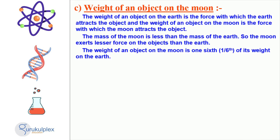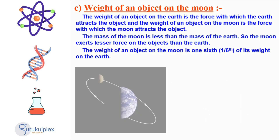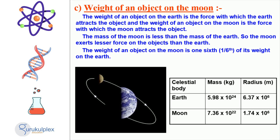The mass of the moon relative to the earth is what determines the weight of an object on the moon. The moon has a much smaller mass than the earth and as such exerts a much weaker gravitational force. This can be seen in the data table, where the mass of the moon is only about one-sixth of the mass of the earth. Consequently, the weight of an object on the moon will be one-sixth of its weight on earth.